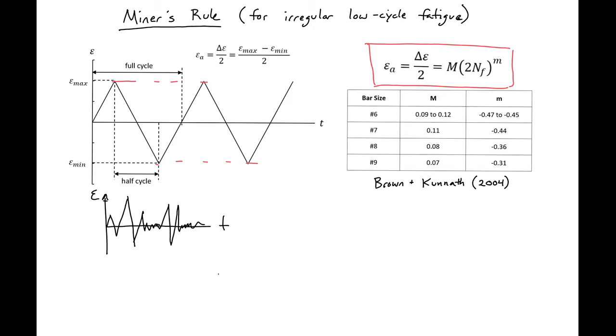What Miner proposed was that a bar will actually fail when the total damage is equal to 1. He set up this damage index, which we'll call d sub i equal to 1 over the number of half cycles, 2 times n sub f i. And when d equal to the summation of all of our damages, when this equals 1, this is failure.